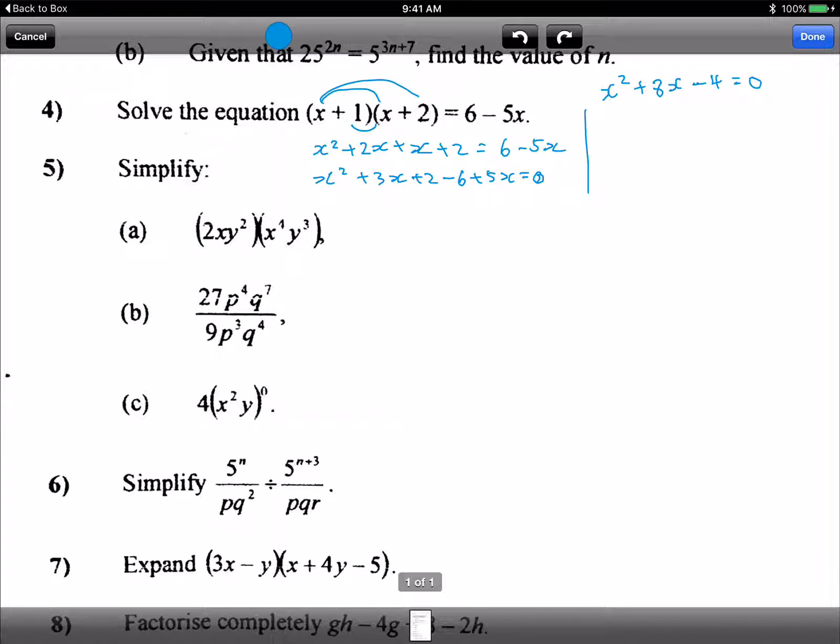Okay so you use the formula negative b plus minus square root b squared minus 4ac over 2a. You find that x equals to 0.472 or x equals to negative 8.47, okay, because you cannot use normal factorization. Look at it, okay that's the tricky part right. Next we do more indices, now for the next part, simplify.